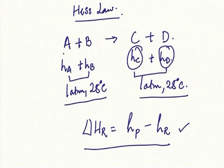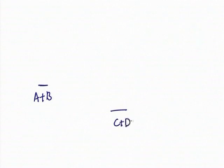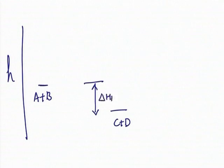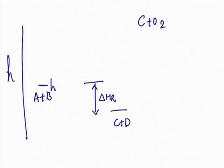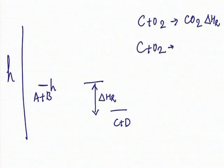Continuing with Hess's law: if I have A + B at some enthalpy level and C + D at a lower enthalpy, this difference is delta H_R, and these are all state properties. To find the enthalpy of various compounds, consider for example C + O2 → CO2. I can measure delta H_R by just measuring how much heat is released. But C + O2 → CO is very difficult to achieve practically, because normally things burn fully and you cannot ensure that every carbon atom is only half-burned to give CO.